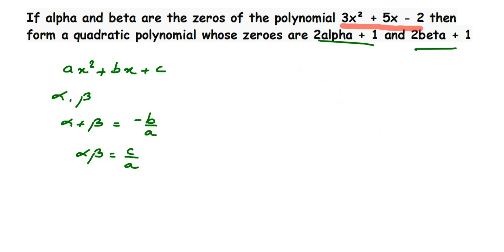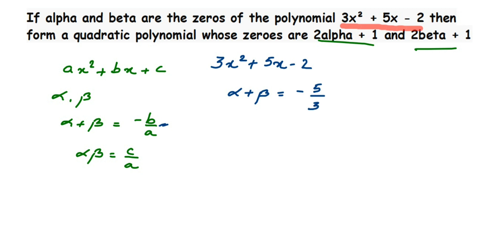Once we have those values, we will use them to find the zeros 2 alpha plus 1 and 2 beta plus 1. For the given polynomial 3x squared plus 5x minus 2: alpha plus beta equals minus b by a, so minus 5 by 3. Similarly, alpha into beta equals c by a, so minus 2 by 3.